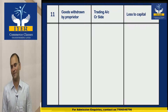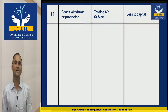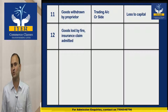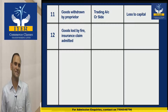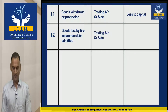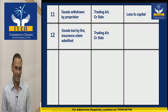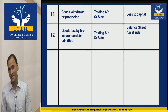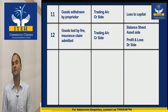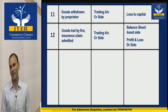The next one is Goods Lost by Fire — Insurance Claim Admitted. These adjustments have three effects: number one is Trading Account credit side, number two is Balance Sheet asset side, and number three is Profit and Loss debit side.